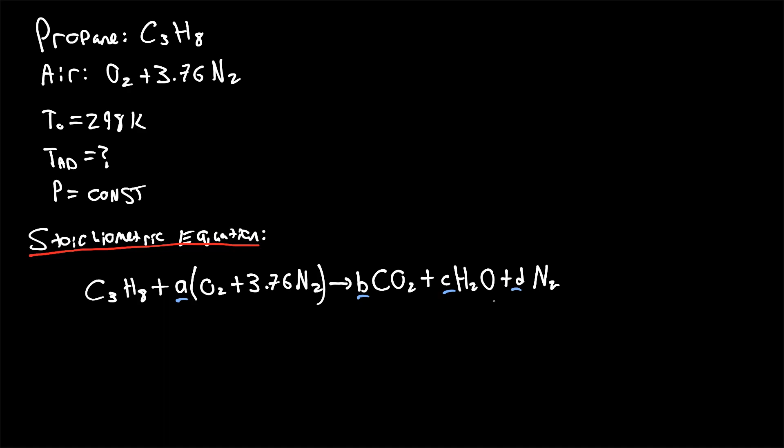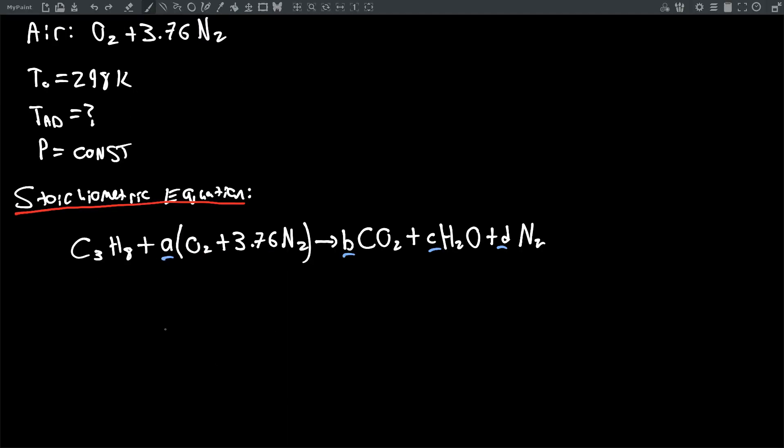We're just assuming that this is a perfectly stoichiometric reaction with no alternative combustion products. So we will determine the values of A, B, C, and D with a simple atom balance between the left and right sides of the equation. So we know that there's three carbon atoms on the left hand side of the equation and there's three, there should be three carbon atoms on the right hand side, so therefore B must be equal to three.